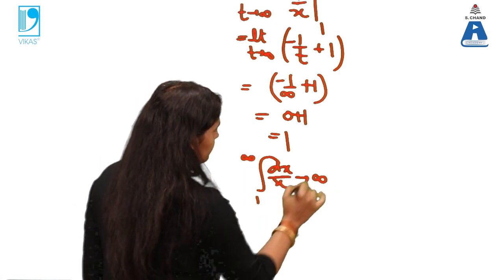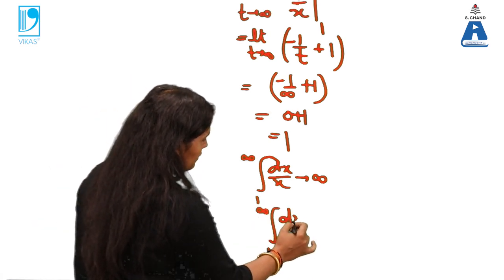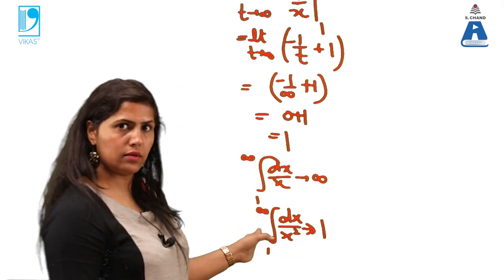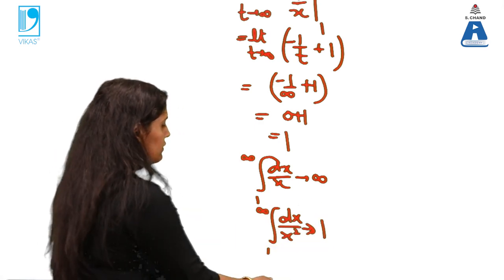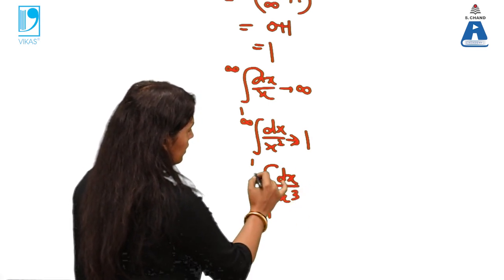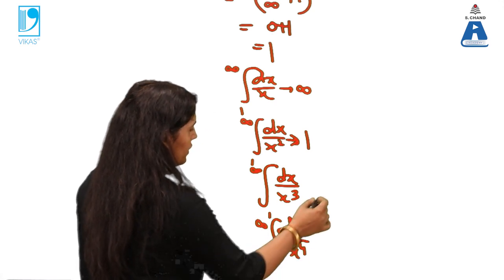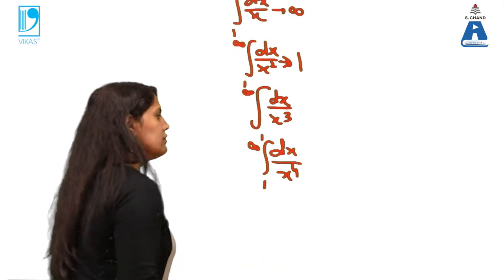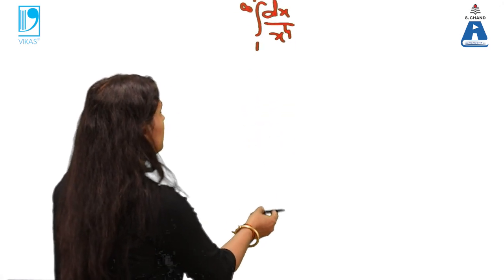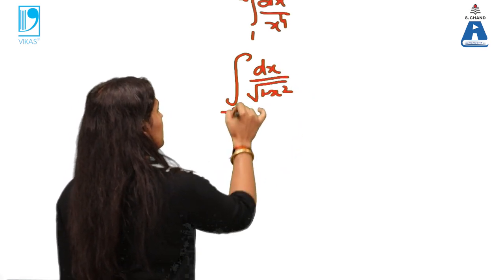Improper integral and if it is 1, it is convergent case. 1 to infinity dx by x, it was infinite, it was improper, it was divergent case but 1 to infinity dx upon x square, you can see the answer is finally 1, it is improper but the area is finite. The same way you can calculate on the parallel lines dx by x cube or it just goes on 4 and so on, all will be convergent.